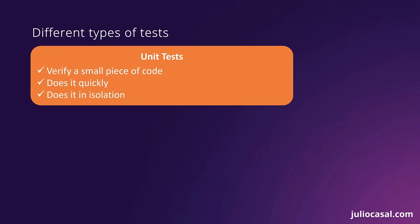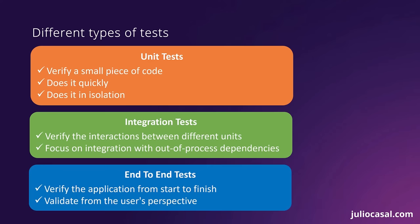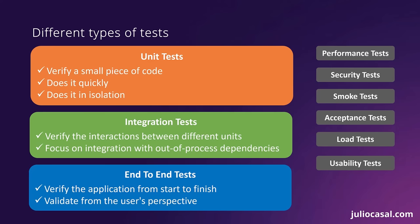Integration tests verify the interactions between the different units of the application. These tests are meant to complement unit tests, since they integrate any out-of-process dependencies like databases, the file system, or external services reachable via the network, giving you a higher level of confidence on the functionality of the app. End-to-end tests verify the application from start to finish with a focus on making sure the application works properly from the perspective of the end-user. There are also many other types of tests: performance tests, security tests, smoke tests, acceptance tests, load tests, usability tests, and many others.